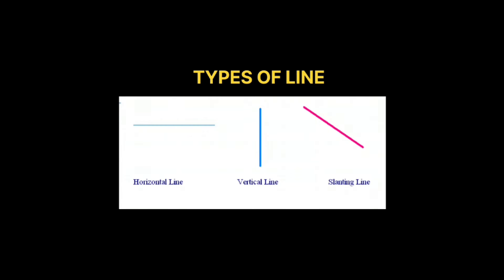A line has different types. First is vertical line. Second is horizontal line. And third is slanting line.